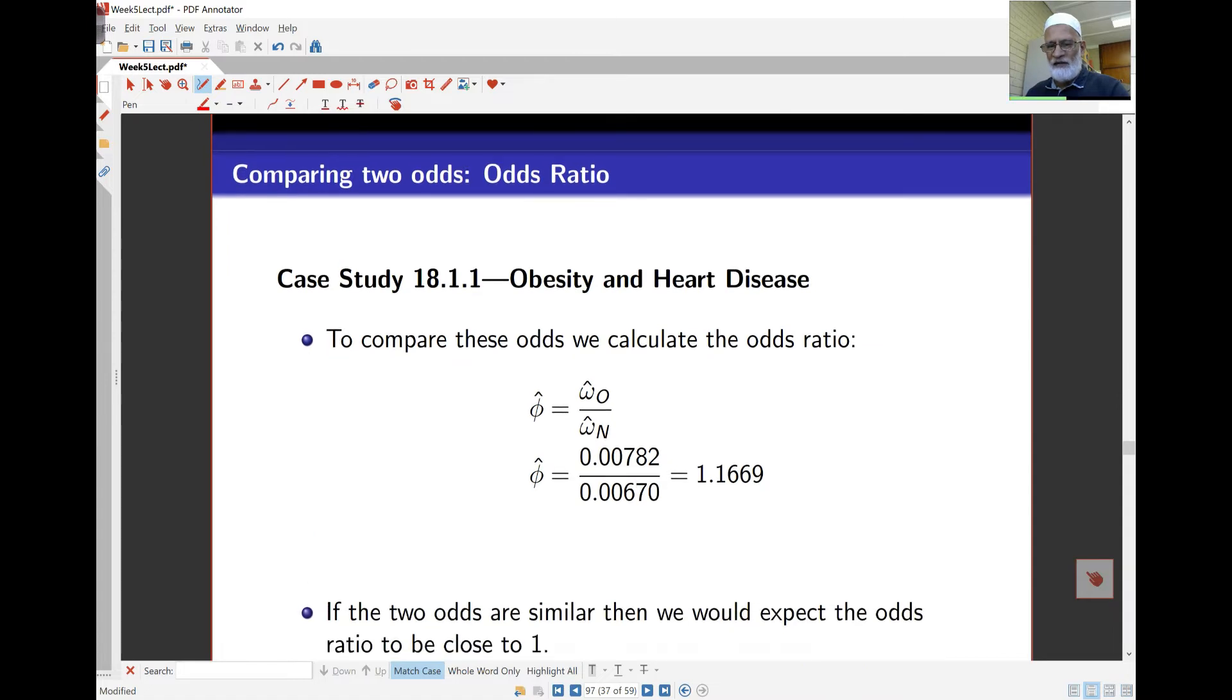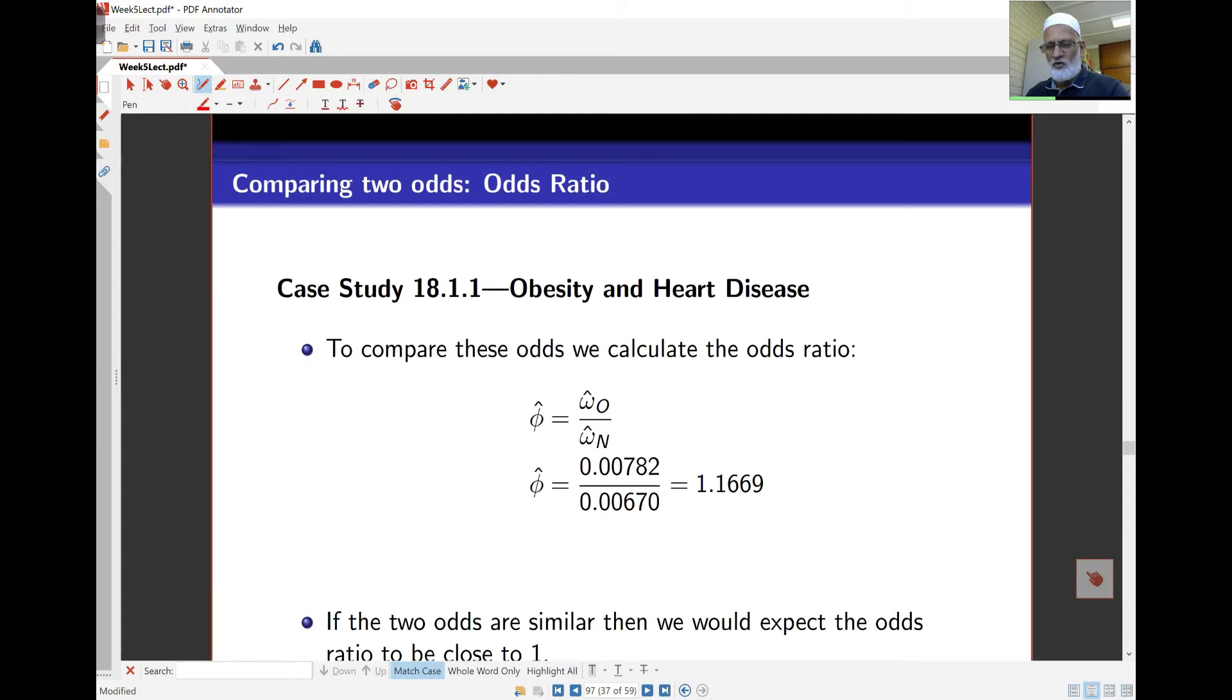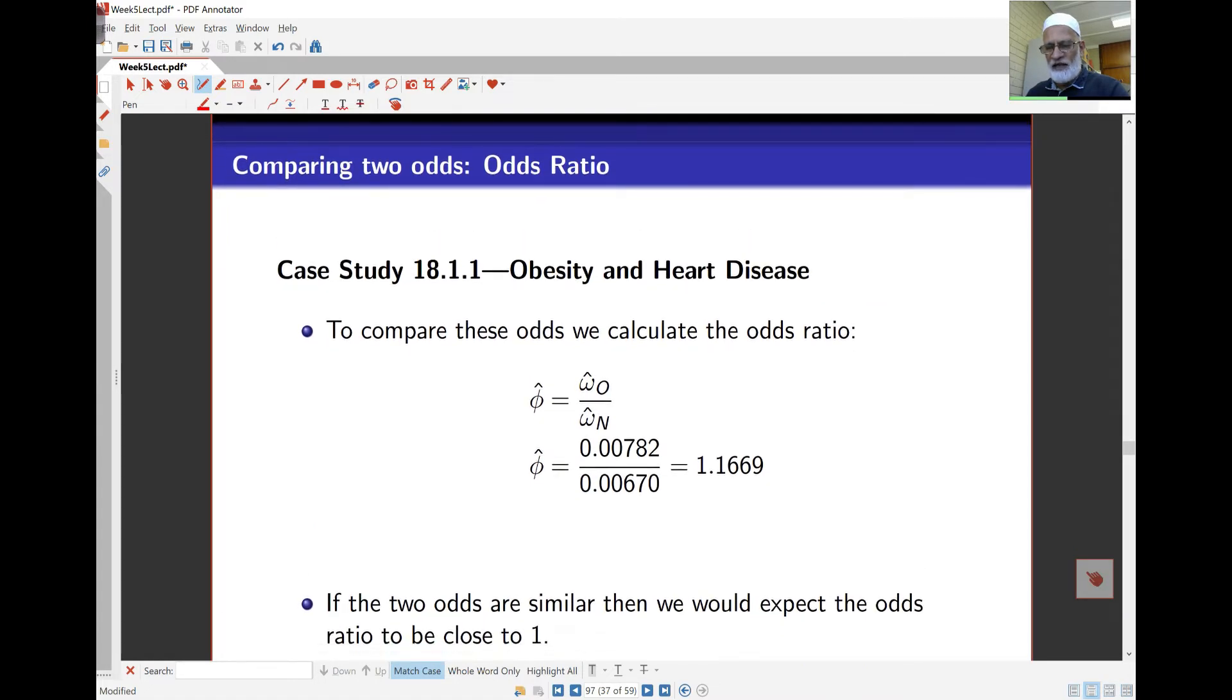So in this case, if I'm looking at the odds ratio, I've got the two odds together, 0.00782 and 0.00670, that is 1.1669. So that essentially means that obese women, this is about 17%. Obese women are about 17% more likely to die of heart disease than non-obese women.